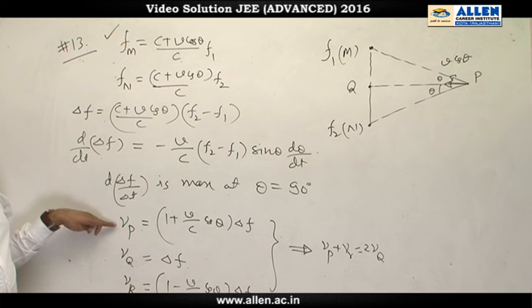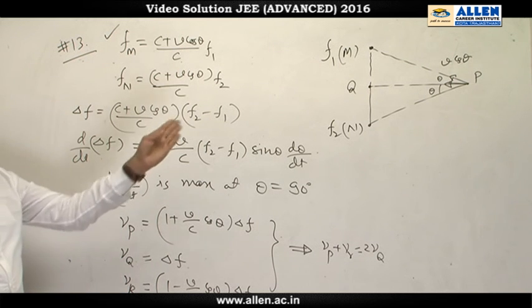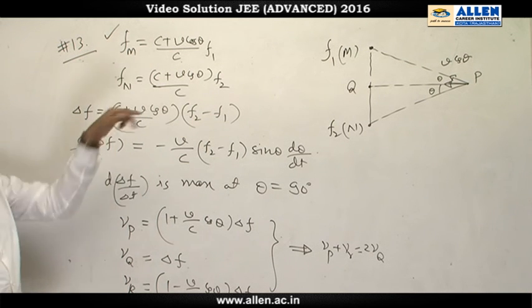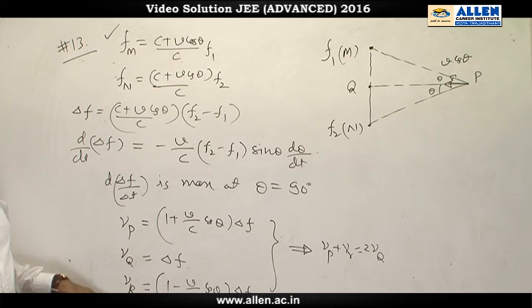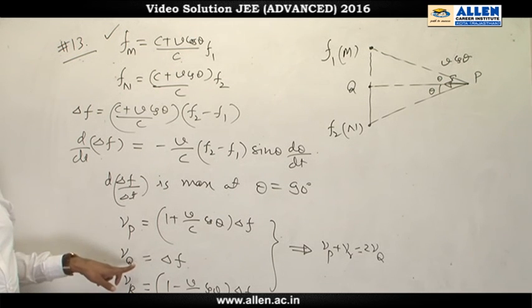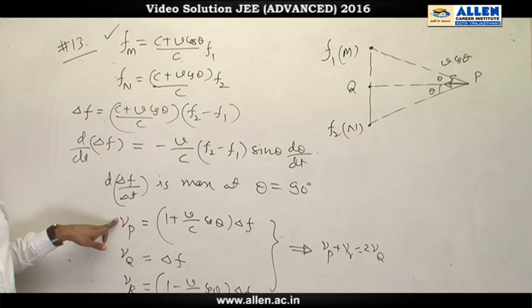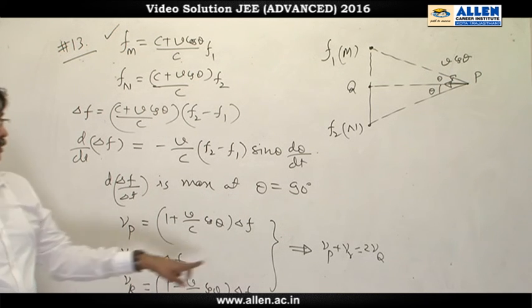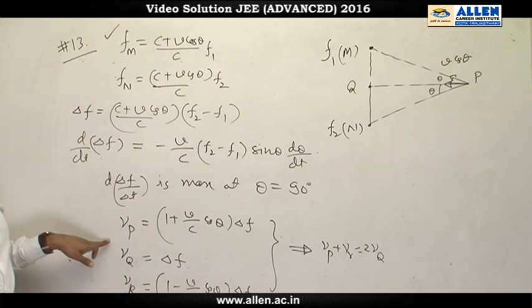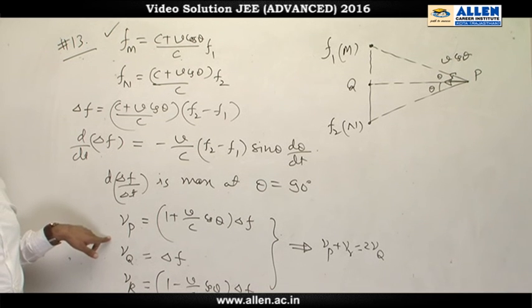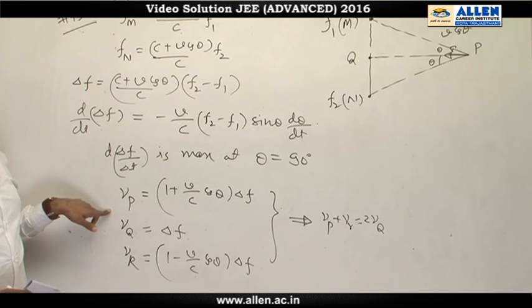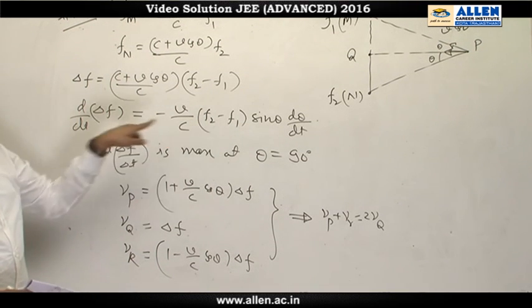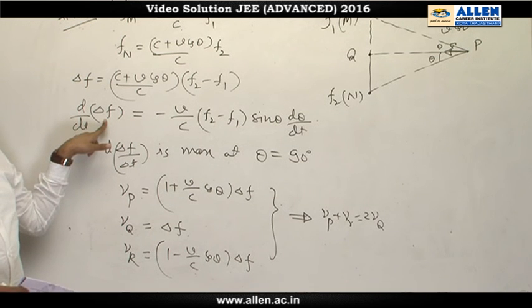Finally, the beat frequencies heard before q and after q and at q are respectively given. So we can see on adding nu p and nu r, we get two nu q. So our answers are variation of rate of change of beat frequency, a, c, and d.